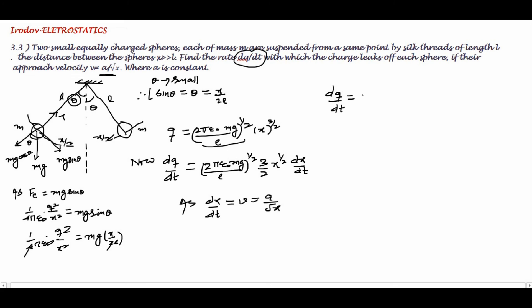I can write dq/dt = √(2π ε₀ mg/L) × (3/2) × (a/√x). √x will cancel out, and finally the value of dq/dt = (3a/2) × √(2π ε₀ mg/L).